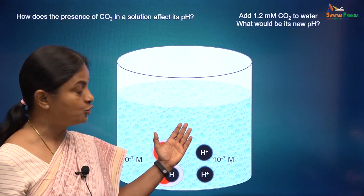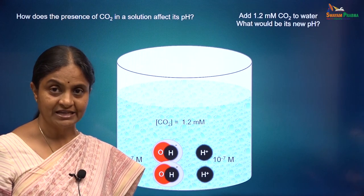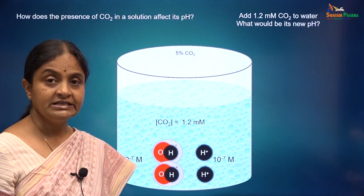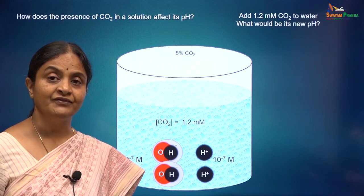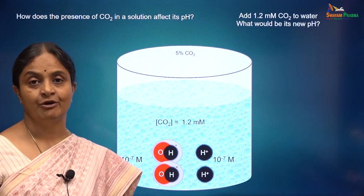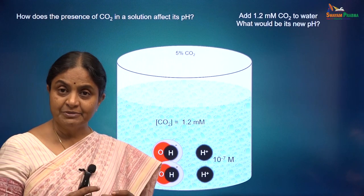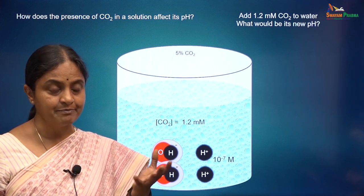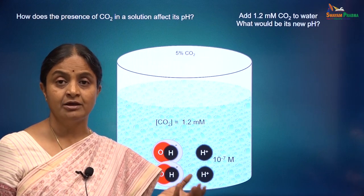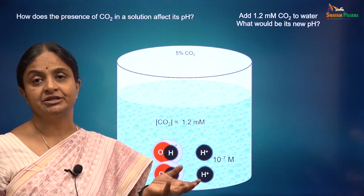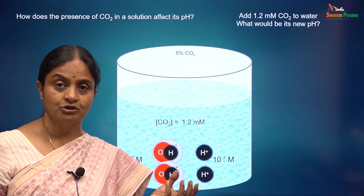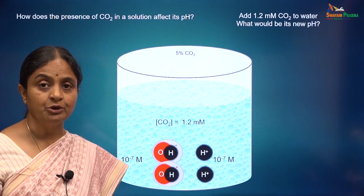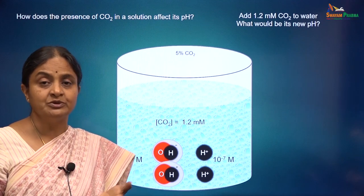If we add 1.2 millimoles per liter carbon dioxide to water, what would the pH be? The easiest way would be to let water stand in an environment of 5% carbon dioxide, or you can bubble 5% carbon dioxide through water. Atmospheric air normally has nearly zero carbon dioxide, so when I say 5% carbon dioxide, it is a mixture of 5% CO₂ and 95% air or 95% oxygen. This 5% CO₂ gas mixture is used in cell culture laboratories to give cells the environment in which they normally reside in the body.